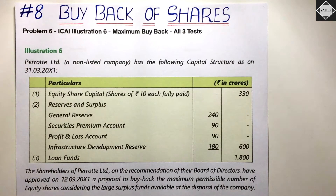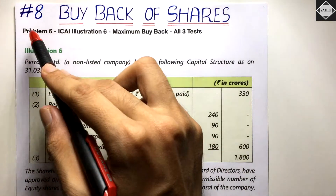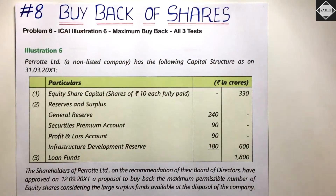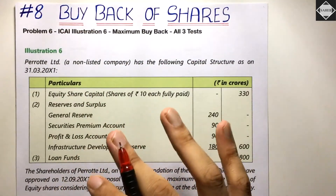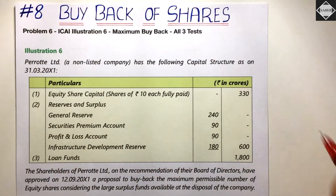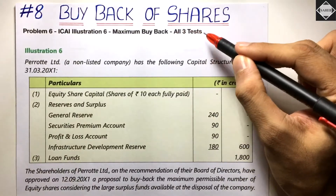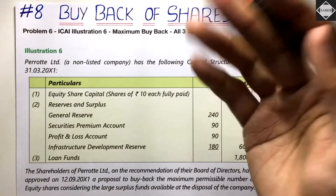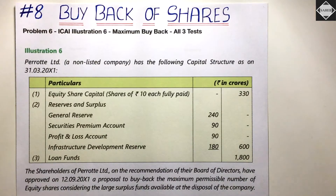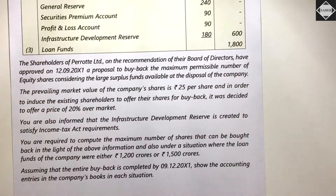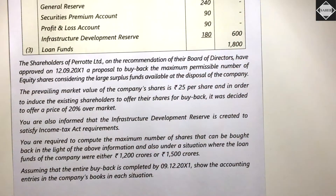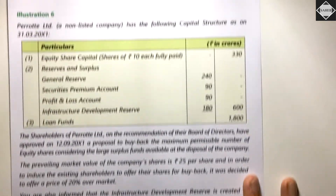Welcome back to Sahab Academy. Today in this eighth video of the buyback chapter, we are going to solve Illustration 6 from the ICAI study material. This is a silent question where they say go for maximum buyback, but the buyback price is given, so we have to do all three tests and calculate the maximum number of shares to buy back. There is also one more special thing — at the end of the question they give us two alternatives.